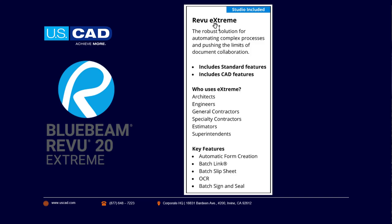The third tier is Bluebeam Revu Extreme, which includes everything from Standard and CAD. It also gives you more batch tools — functions that affect multiple sheets or multiple PDFs — like batch linking, slip sheeting, and sign and seal. It also has the commonly requested OCR character recognition functionality, the option to create forms, quantity linking to take your measured values and link them into an Excel spreadsheet, and even redaction.